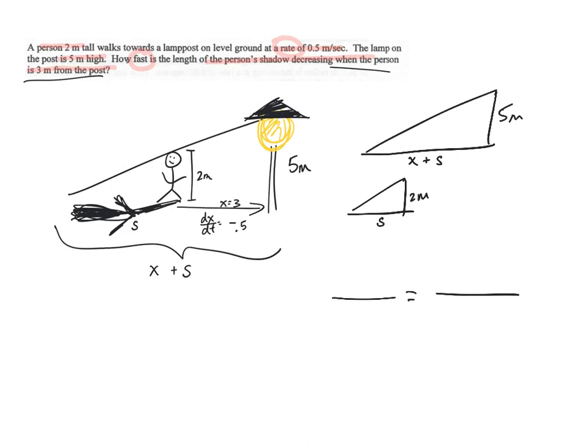And I would say, hey, five over X plus S is equivalent to two over S. That's what you would do in geometry, right? So that would be our formula. And while we're at it, let's go ahead and cross multiply. And I'll have five times S equals two times X plus two times S. And while I'm at it, let's go ahead and get all my S's on one side. So when I move that two S over, that's going to be three S equals two X. So that's all the formula part of it.